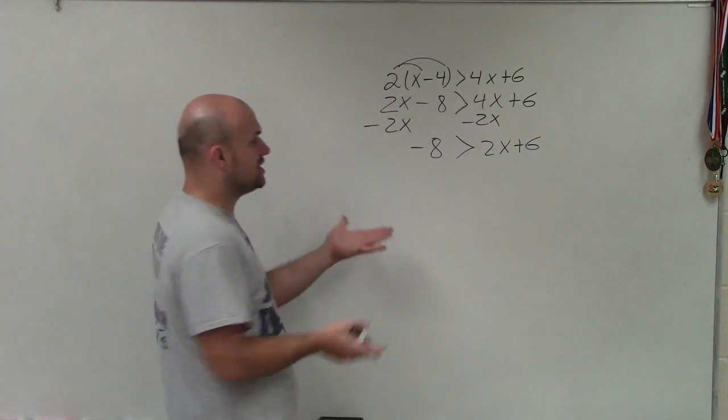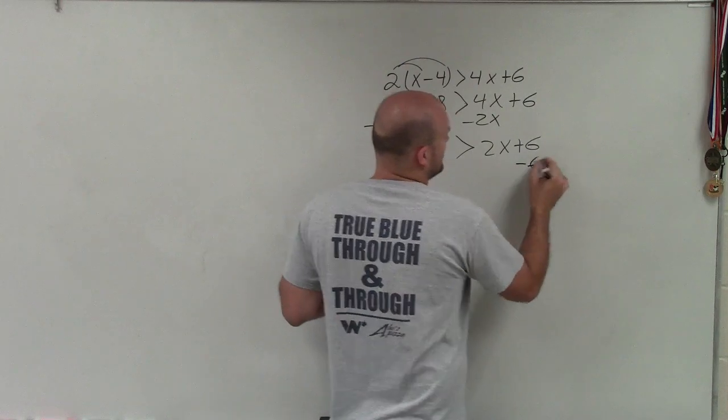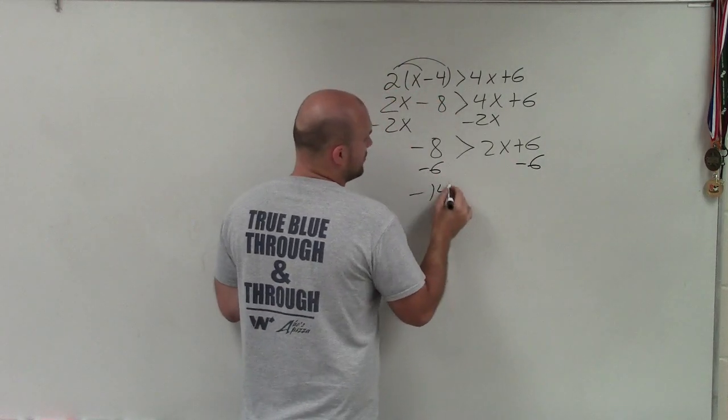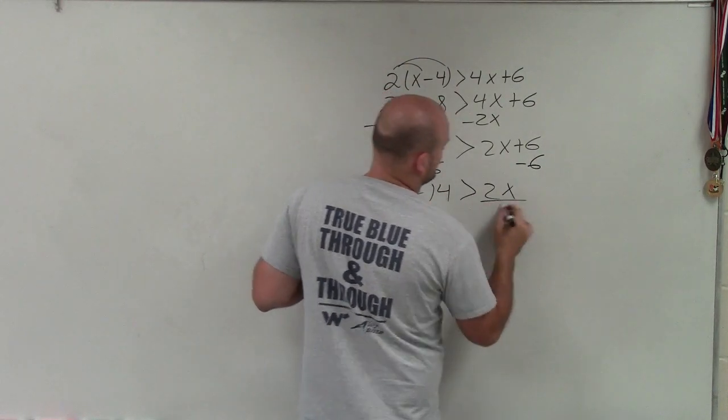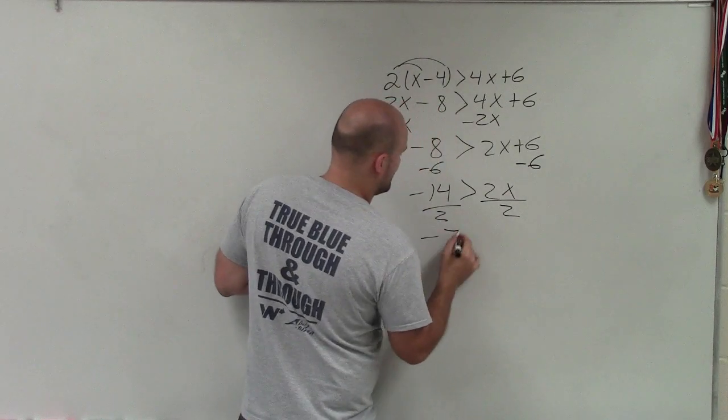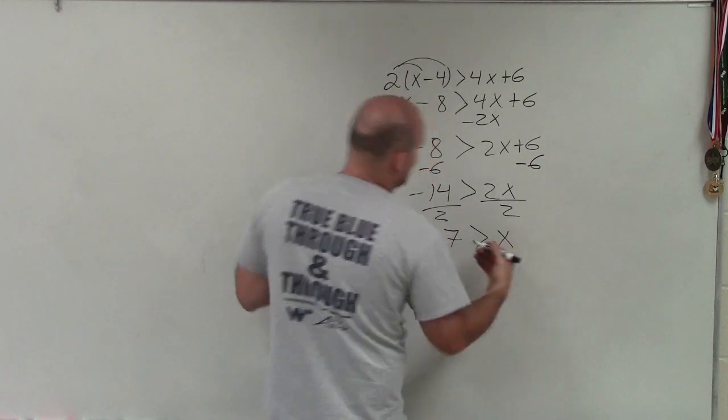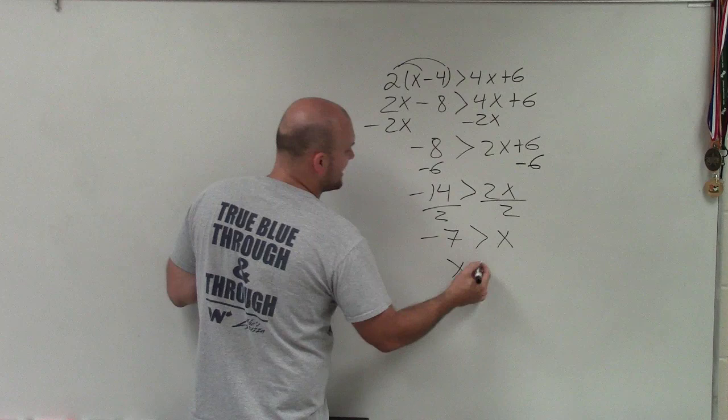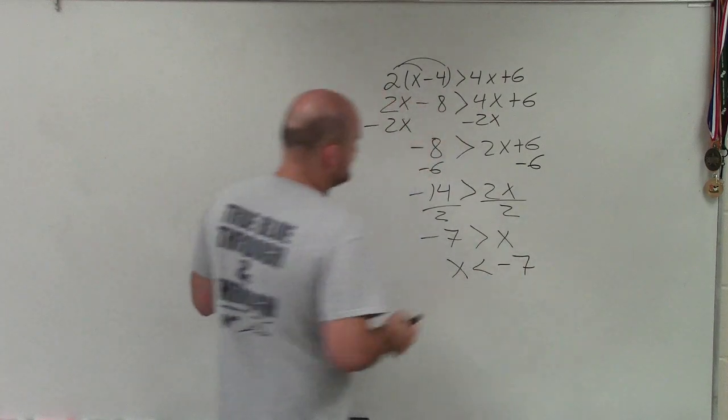To solve for x, I use my inverse operations. So I subtract 6. I have negative 14 is greater than 2x. Divide by 2, divide by 2. Negative 7 is greater than x, or we can rewrite this as x is less than negative 7.